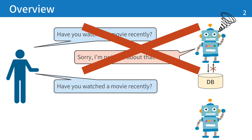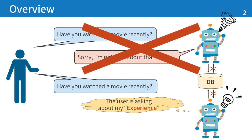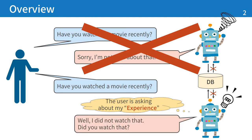In our approach, the robot cannot understand the question content, but can understand the question type. In this case, the question type is 'experience.' Based on the question type, the robot says, 'Well, I did not watch that. Did you watch that?' In this presentation, I explain how to generate this response and its effect.